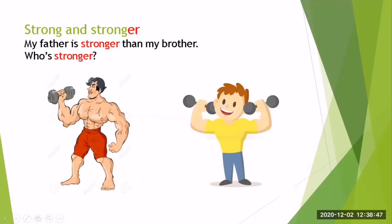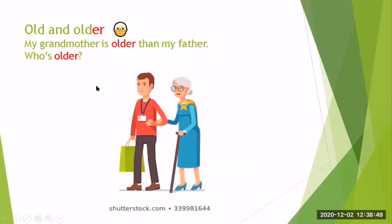Ya este ejemplo lo dimos al principio. Old and older — viejo, más viejo. My grandmother is older than my father. Who's older? My grandmother is older.